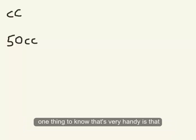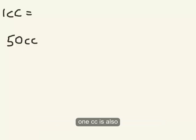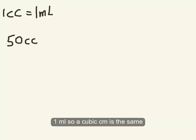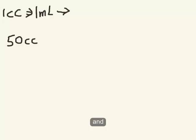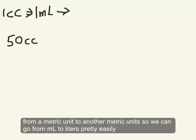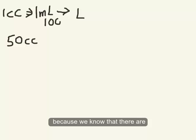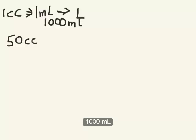So one thing to know that's very handy is that one cubic centimeter is also one milliliter. So a cubic centimeter is the same size as a milliliter. So that can be our first step to kind of go from centimeters to milliliters. And it's really easy to go from one metric unit to another metric unit. So we can go from milliliters to liters pretty easily, because we know that there are a thousand milliliters in one liter. Milli means thousandth.